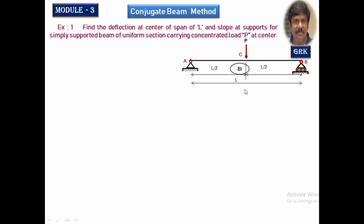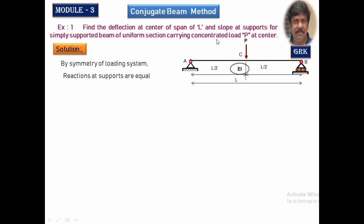The reactions will be equal at both the supports. First, we are going to calculate the reactions. Reactions will be equal at both the supports due to the symmetry of loading. The loading is at the center, therefore the reactions at the supports will be equal and that will be equal to P by 2 — half on each side — acting upward. After this, we are going to calculate the M by EI calculations.